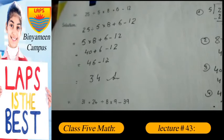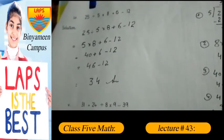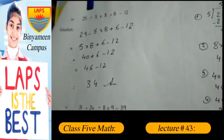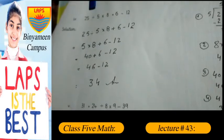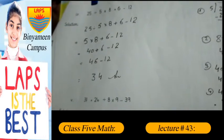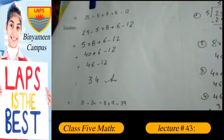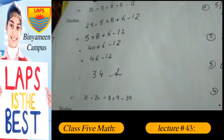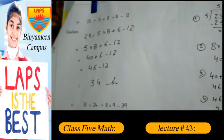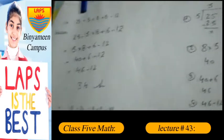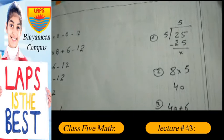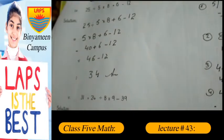25 divided by 5 multiplied by 8 plus 6 minus 12. Solution: 25 divided by 5 multiplied by 8 plus 6 minus 12. According to the math rule, first 25 divided by 5, we get 5.